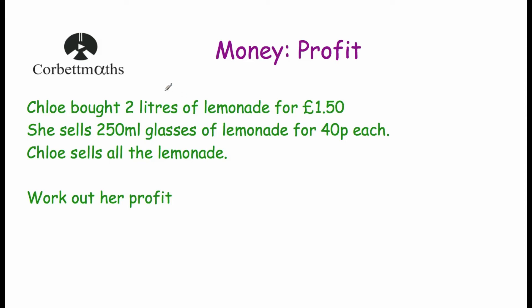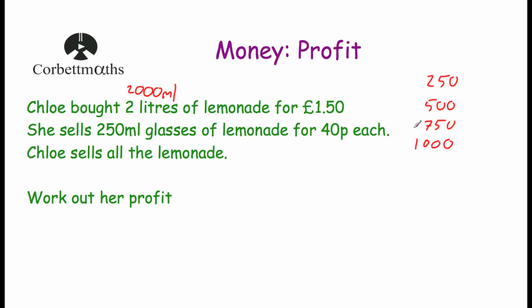We've got different units here — 2 litres of lemonade and 250 millilitre glasses. Let's change our 2 litres into millilitres. In each litre there's 1,000 millilitres, so in 2 litres there's 2,000 millilitres. We could use division or count up in 250s: 250, 500, 750, 1,000 — so four glasses is a litre, which means 2 litres should be 8 glasses.